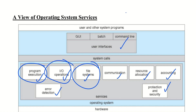Next is file system manipulation. The program needs to read and write files and directories, create and delete them, search them, list file information, and perform permission management. That is file system manipulation.